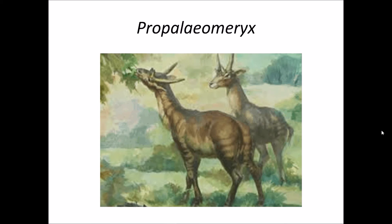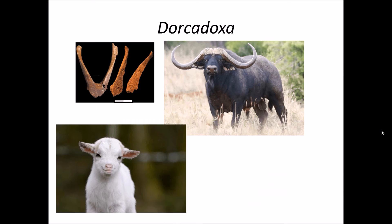Propaliomerics were giraffe-like creatures and we put them in the family Giraffidae. Dorkae Doxa belongs to the family Bovidae, which includes animals like goat, sheep, deer, buffalo, cow, etc.